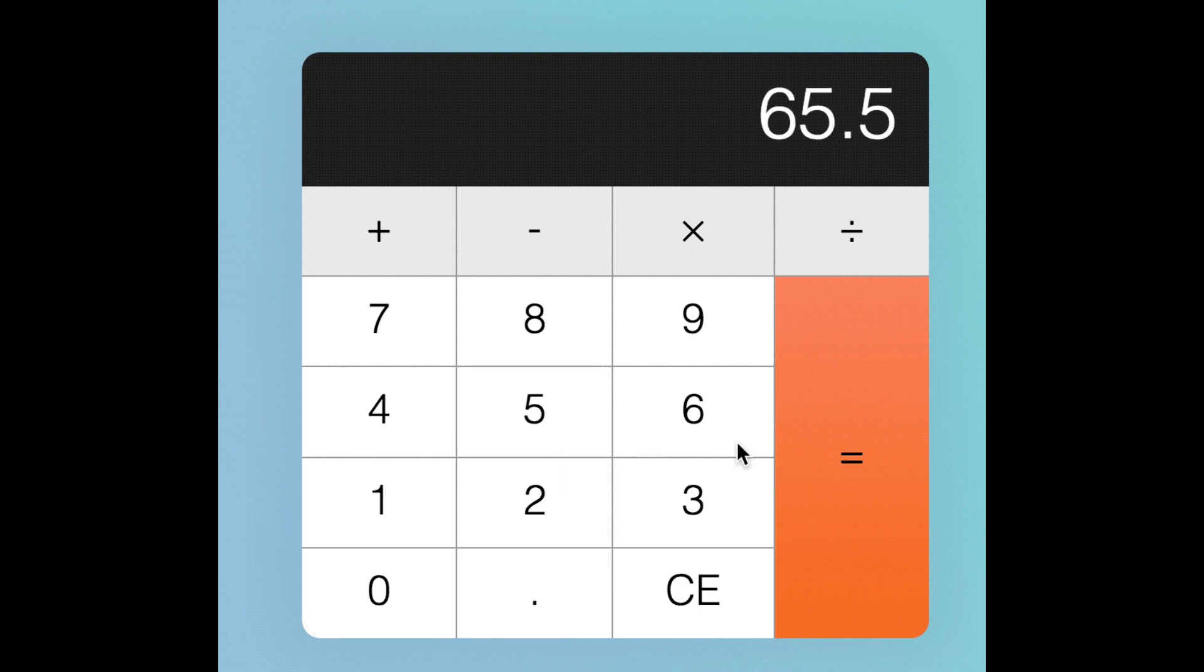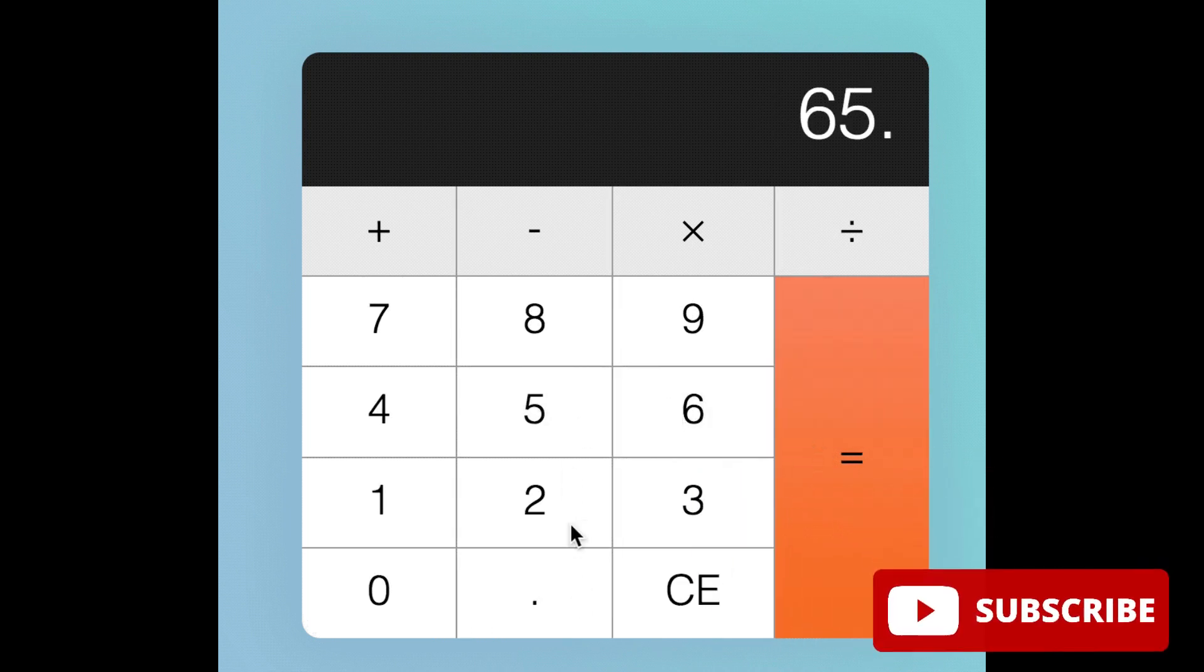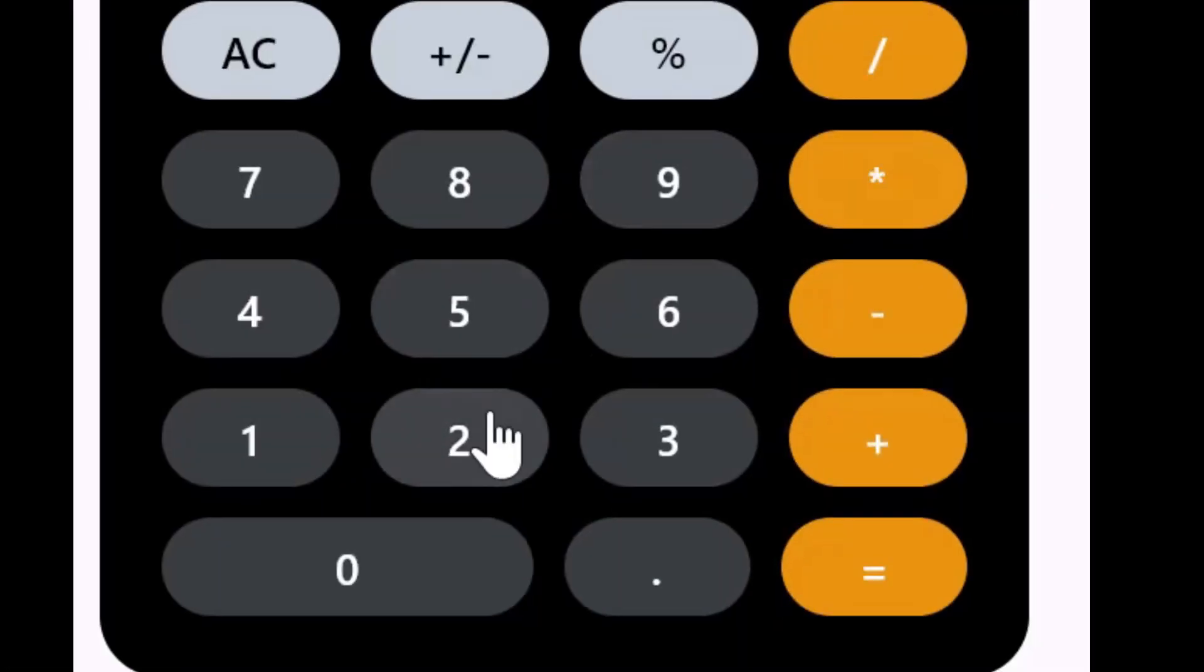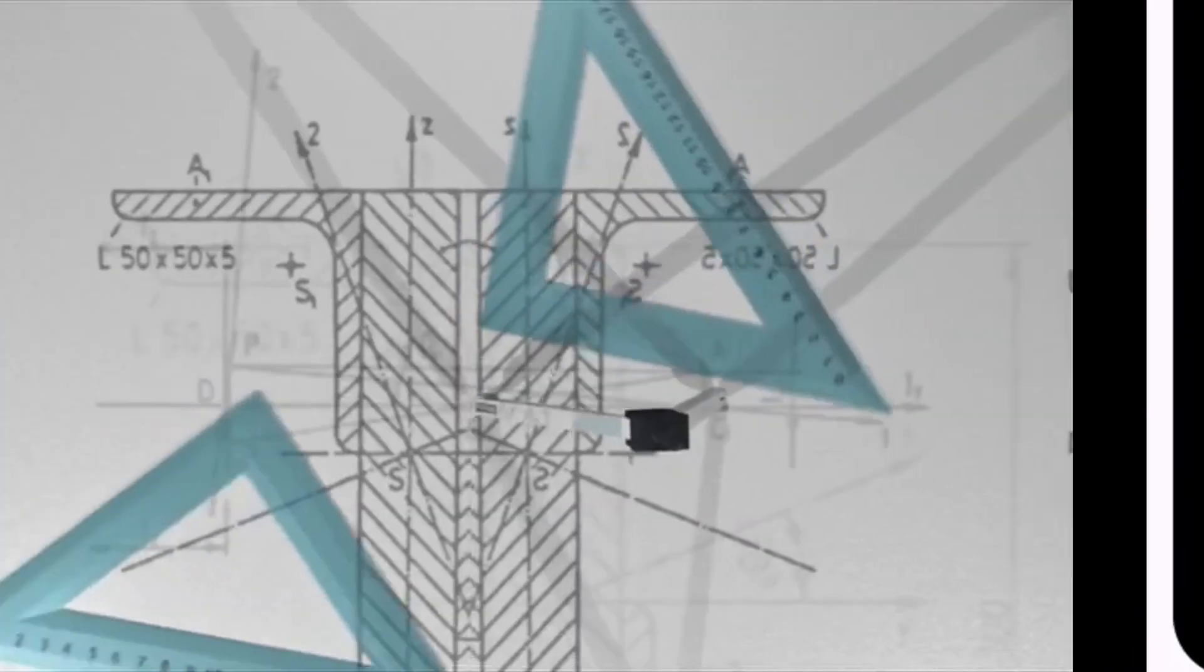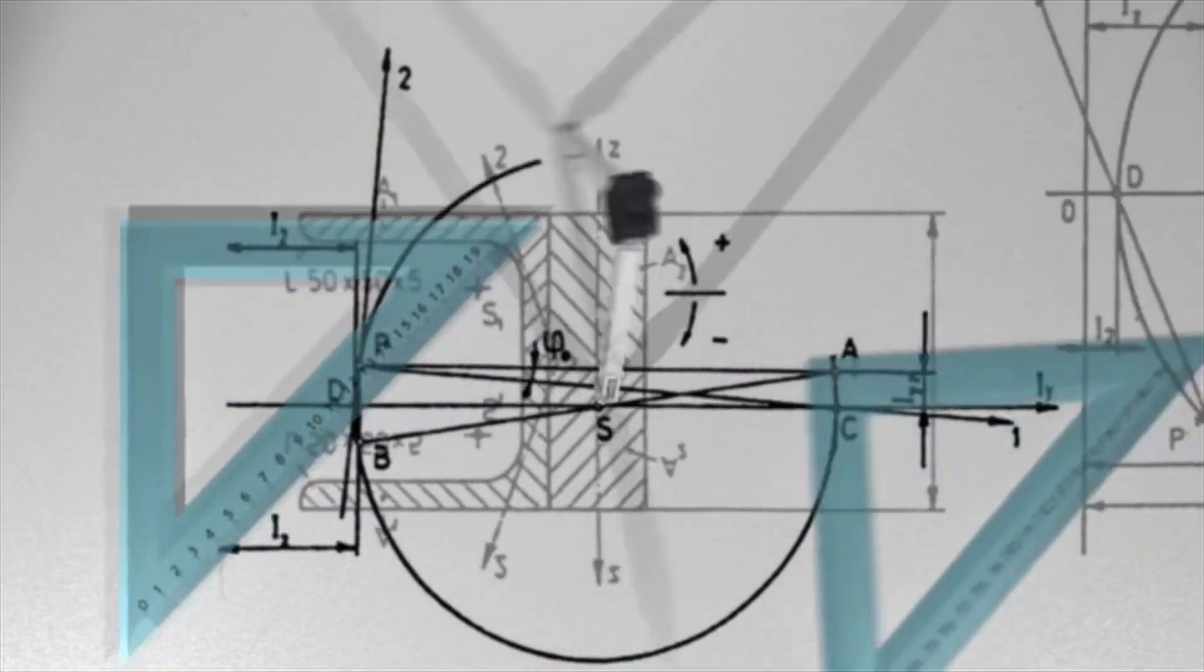The equal sign, or the equality sign, is a fundamental symbol in mathematics used to indicate that two expressions are equal. It is one of the most widely recognized symbols in the world and is used daily by millions of people, from school children to scientists and engineers.